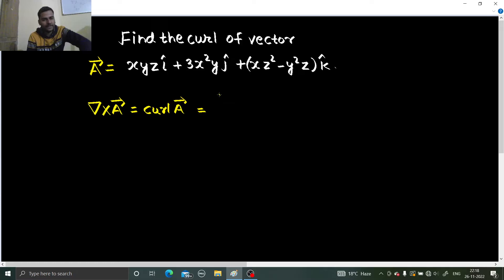How do we find this? We have i cap, j cap, and k cap. Here we have del by del x - these are just operators - del by del y, and del by del z. Below that, the components: whatever is with i, what is with j, and what is with k. So xyz, 3x²y, and xz² minus y²z. Let's solve this determinant.